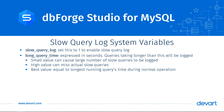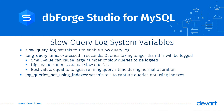Then we have the parameter log_queries_not_using_indexes. If we set this parameter value to 1, MySQL will log every query that's not using any index, even if the query is taking less than the long_query_time value. It may sound like a good idea to find which tables need indexes, but bear in mind, sometimes the query optimizer may not decide to use an index even if one exists. Therefore, setting this parameter to 1 doesn't necessarily mean finding tables that need indexing.